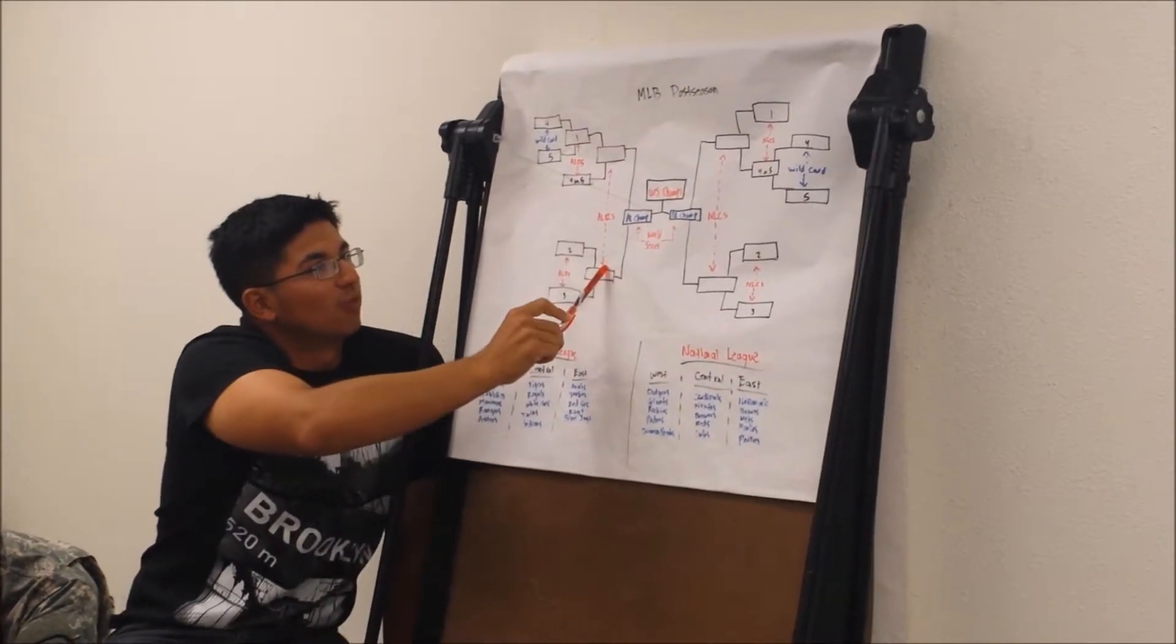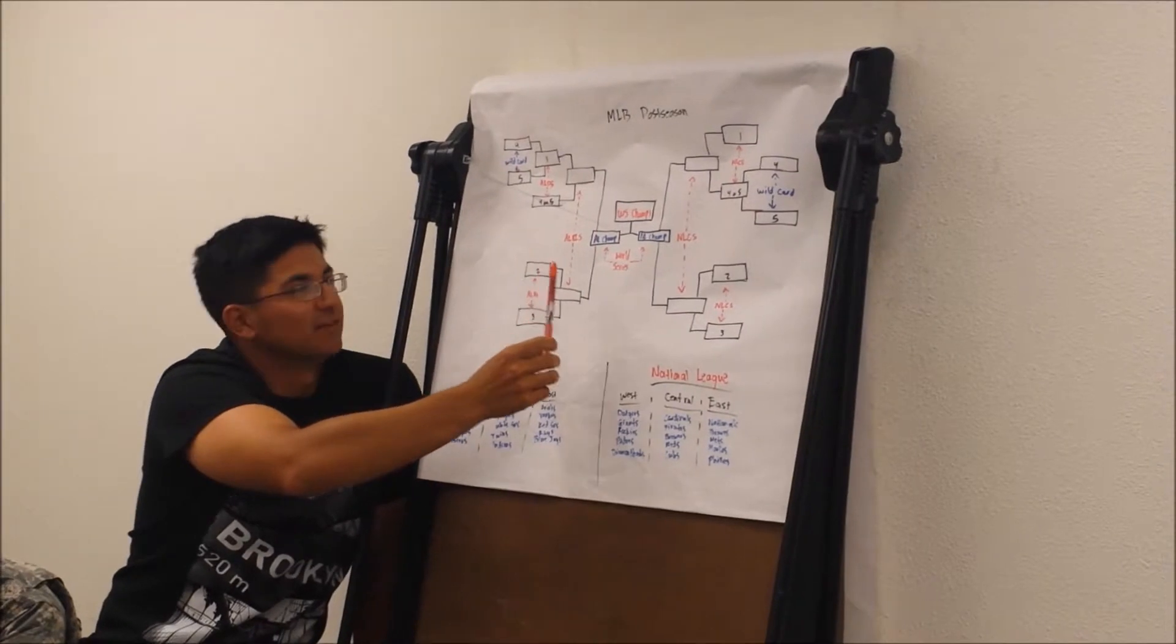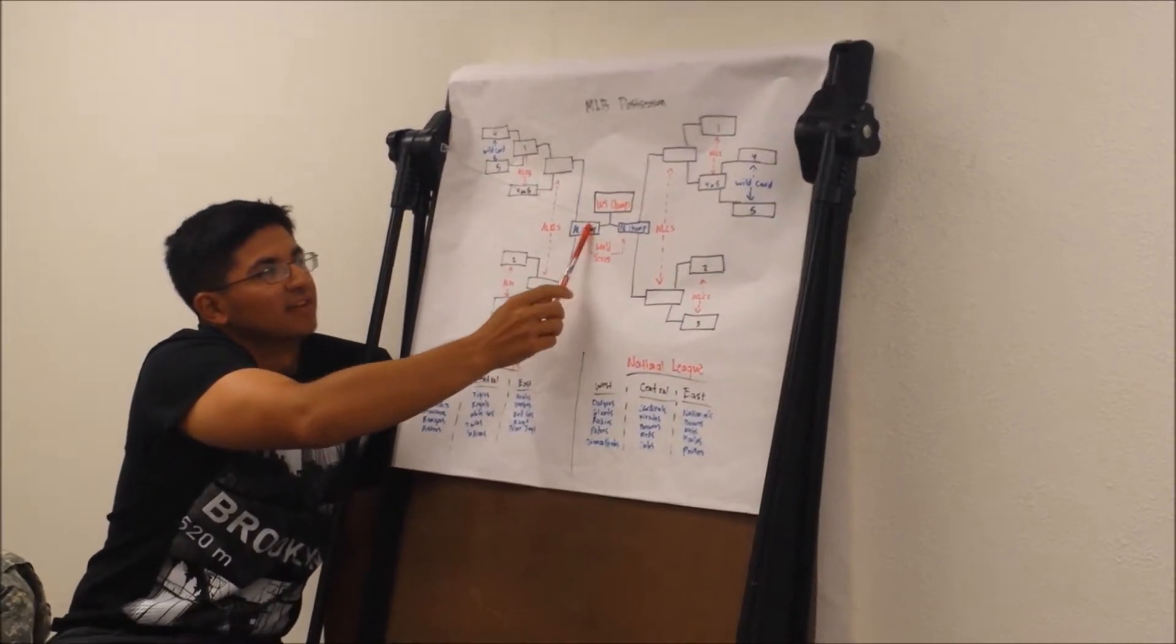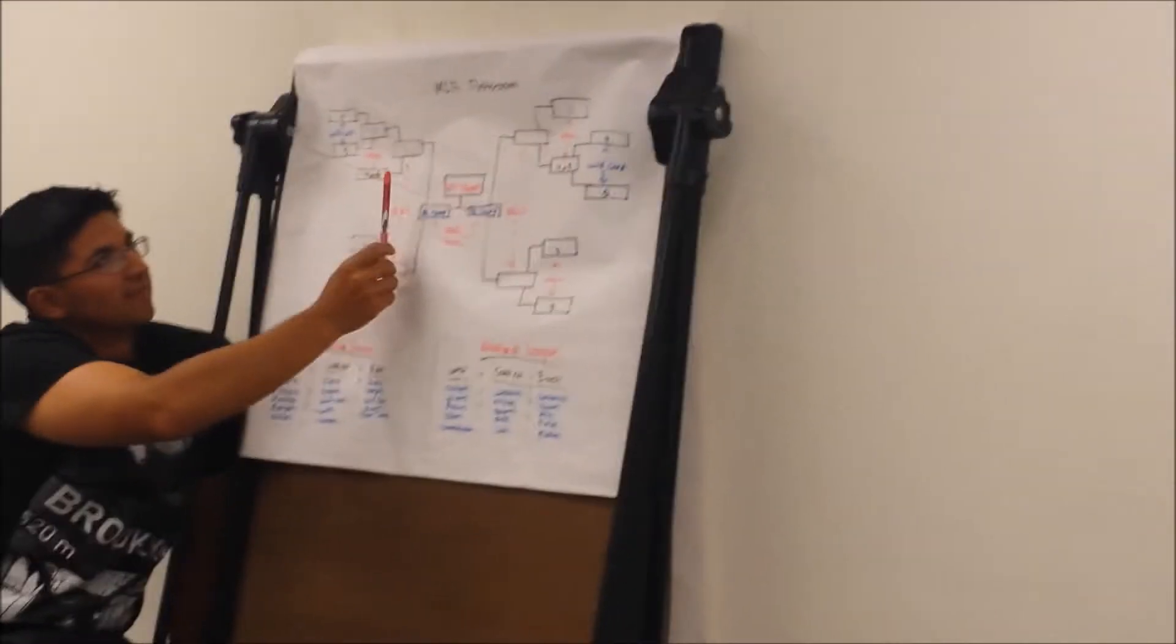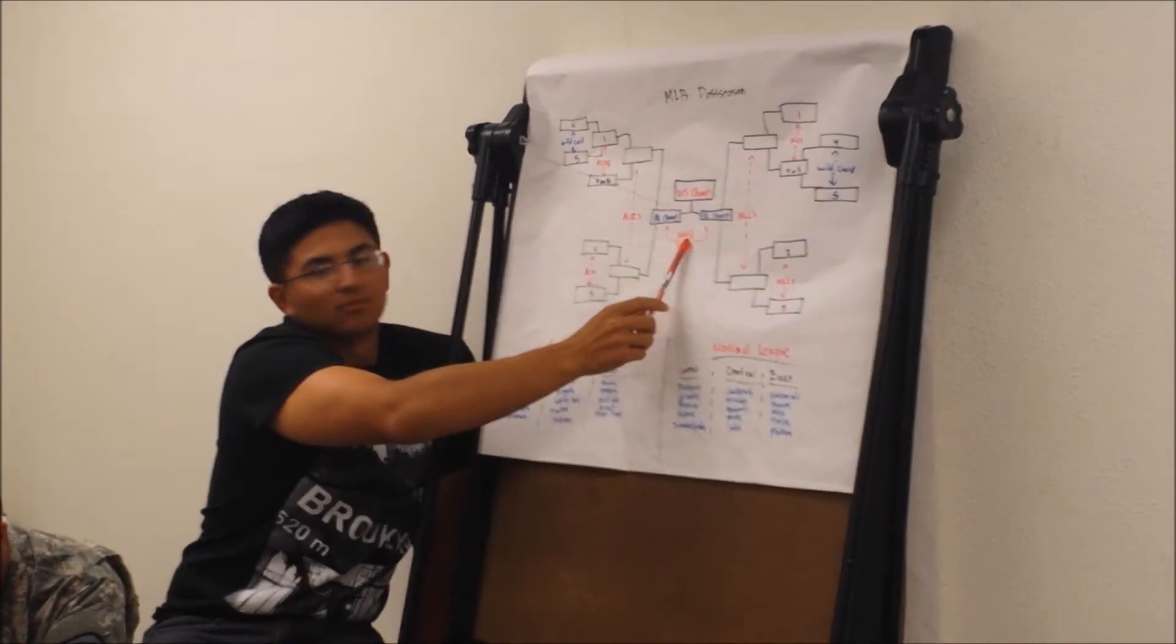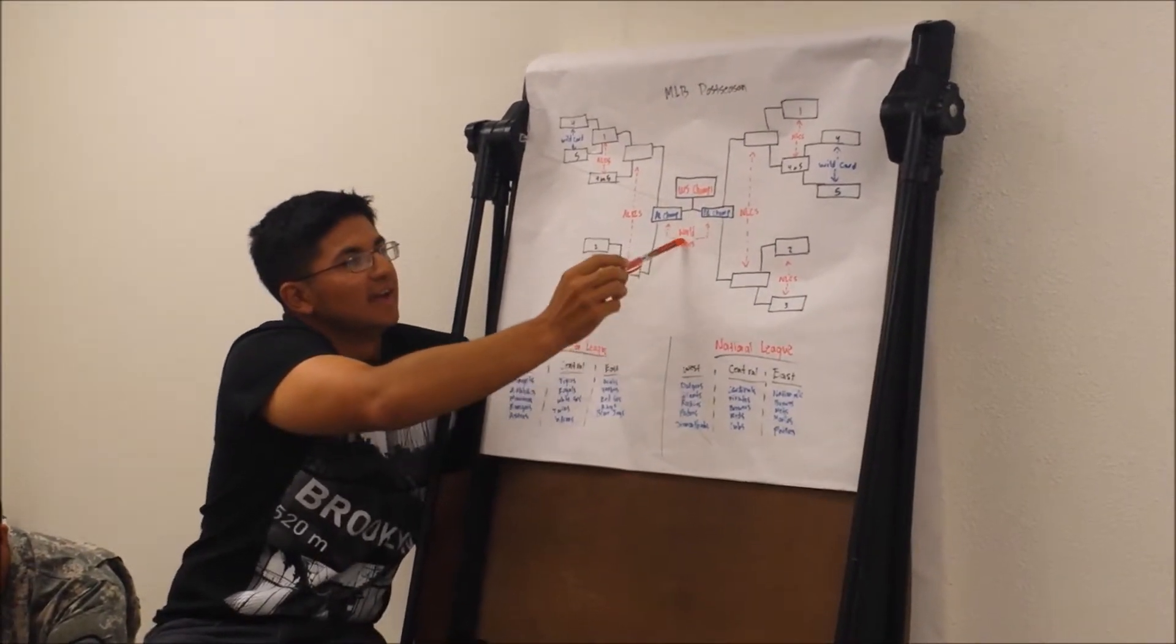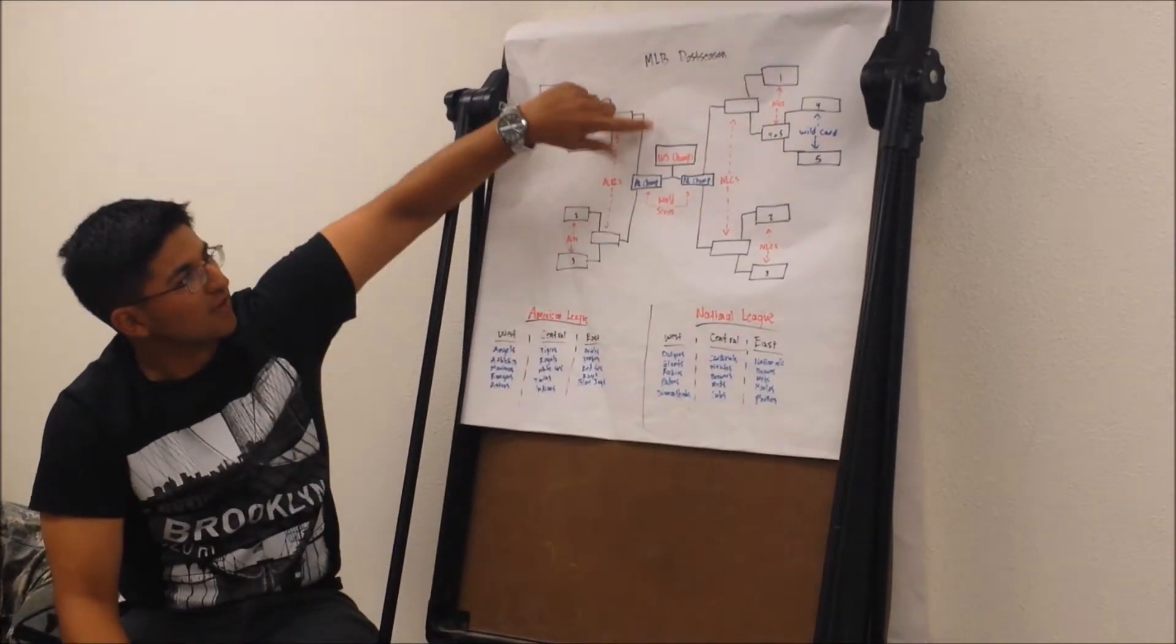Whoever wins the best 4 out of 7 advances to what every team's goal is, at the end of the year. You'll get the American League Champion on this side, and the National League Champion on this side, and they'll face off in what's called the World Series in baseball. They will face off in the best 4 out of 7. Whoever wins the best 4 out of 7 will take that trophy home.